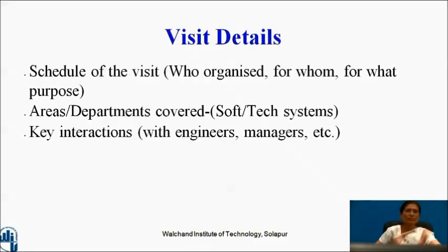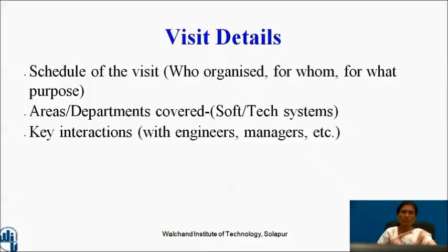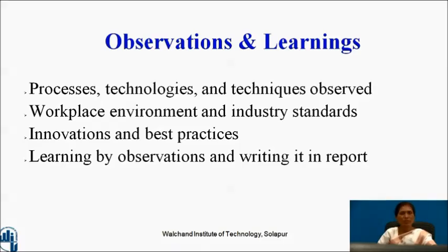Details of the company and technical systems are also observed by visiting the industry. Once you have visited, you write the visit details: the schedule of the visit, who organized it, for whom it was organized, and for what purpose. Areas or departments covered — soft and technical systems — and key interactions with engineers and managers are noted. In the observations and learning section, you record the processes undergone, the technology — whether updated or old — techniques observed, workplace environment, industry standards, innovations, and best practices.